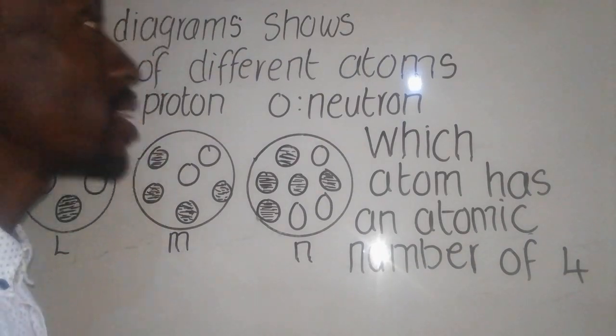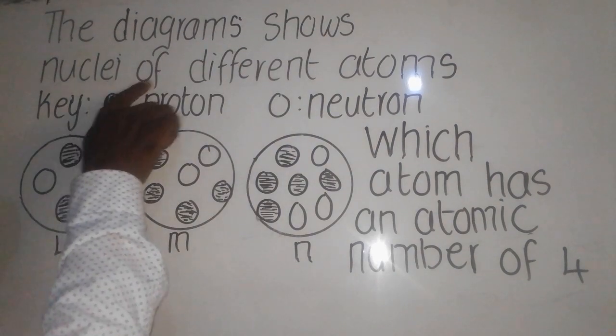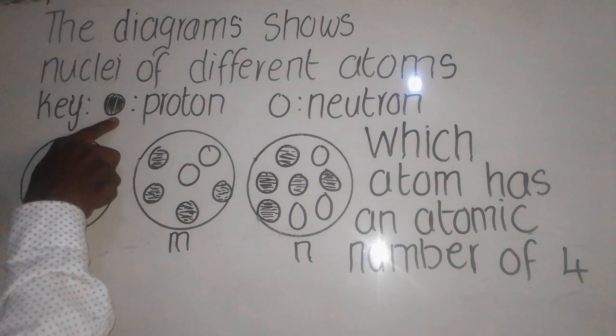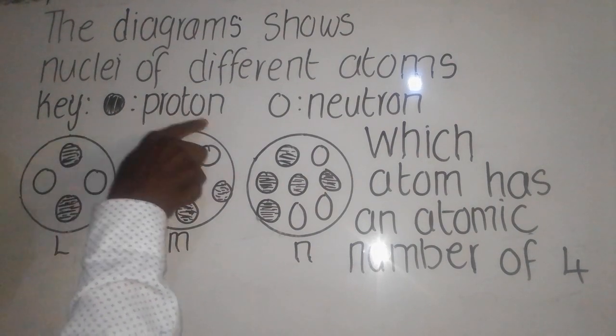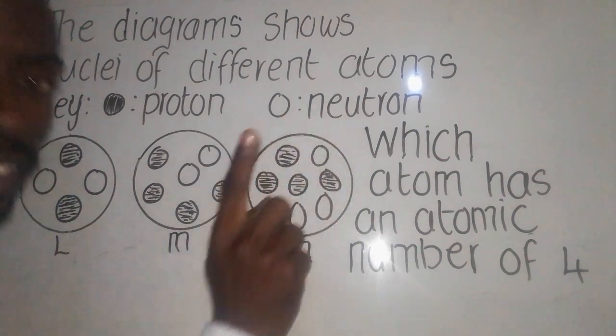We have a chemistry question that says the diagrams show nuclei of different atoms. The key is the dark spot represents the proton, the white spot represents the neutron.